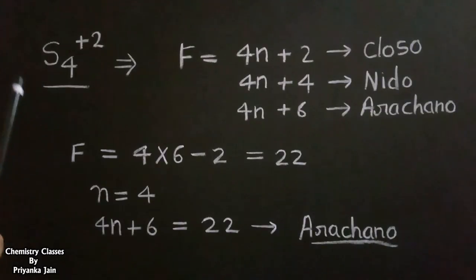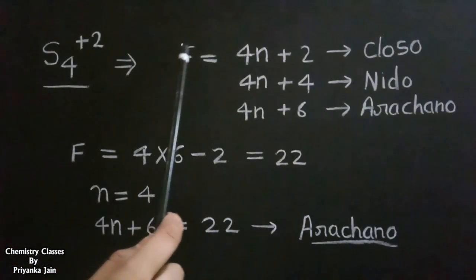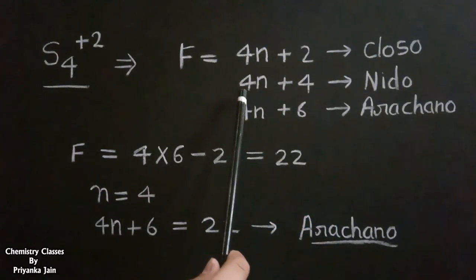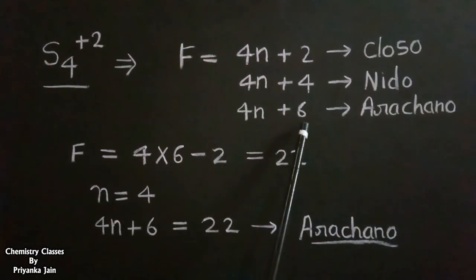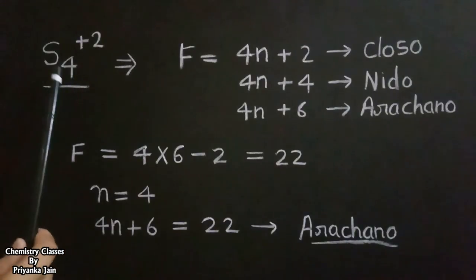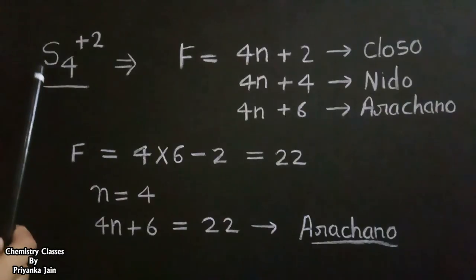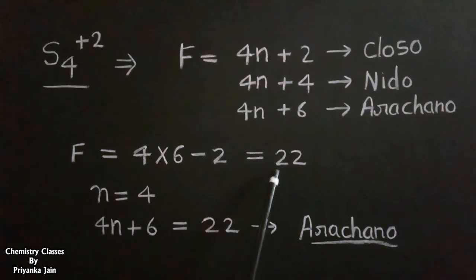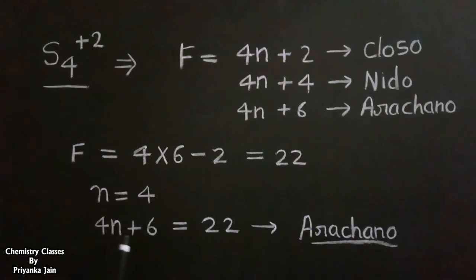For another type of cluster like S₄²⁺, the rule becomes somewhat different. Here the framework electrons (not pairs) are counted: 4N+2 gives closo, 4N+4 gives nido, and 4N+6 gives arachno. For S₄²⁺: total electrons = 4×6 − 2 = 22. With N = 4, the value 4N+6 = 22 corresponds to arachno, so S₄²⁺ has an arachno structure.